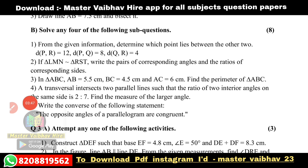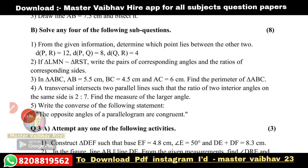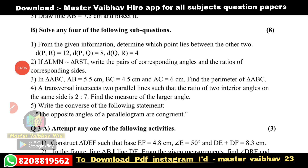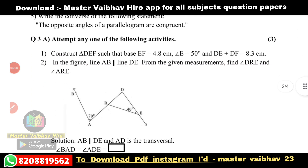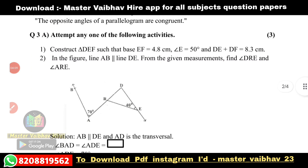Fourth: a traversal intersects two parallel lines such that the ratio of two interior angles on the same side is 2 ratio 7 — find the measure of the larger angle. Fifth: write the converse of the following statement — the opposite angles of a parallelogram are congruent.